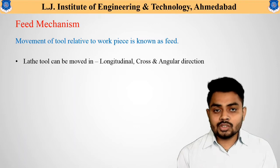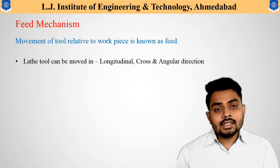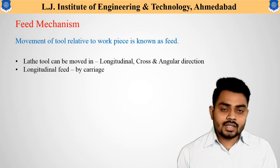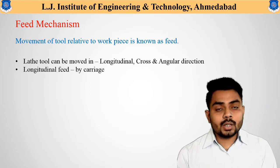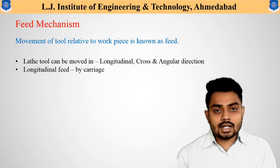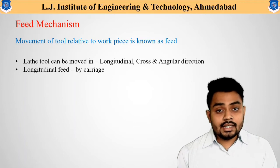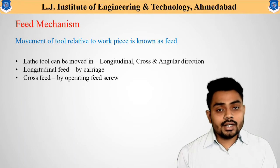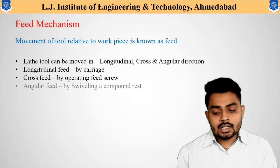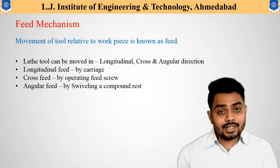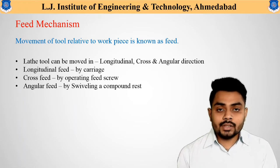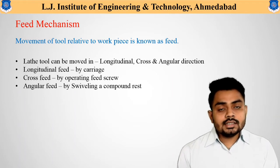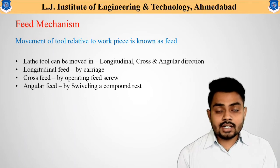There are different variations of movement required for different machining operations on the workpiece. The longitudinal movement is given to the workpiece or tool by using the carriage. The crosswise movement, perpendicular to the workpiece, is given by using the cross slide or feed screw. The angular movement is given by using the swivel plate attached to the compound rest screw. All these movements can also be obtained automatically using different mechanisms.